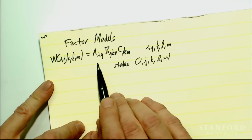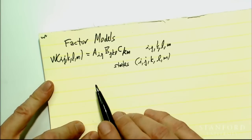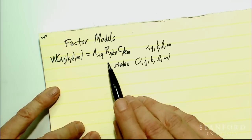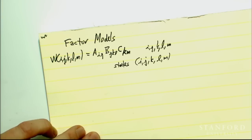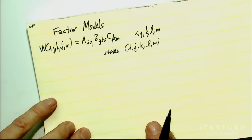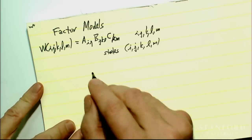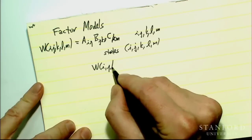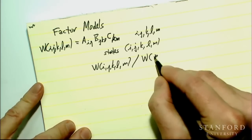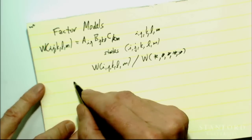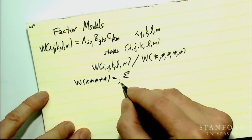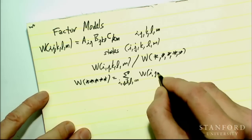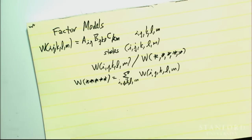A sub IJ is basically a matrix of numbers — if these are digits, it's a ten-by-ten matrix. C is also a matrix, but B is a tensor, perhaps ten-by-ten-by-ten. So it's a bunch of numbers that you multiply together to get the weight of a state. If we're thinking of these as probabilities, then the probability of being in state IJKLM is W of IJKLM divided by W-star-star-star-star-star, which is the total weight — defined as the sum over all I, J, K, L, M of W of IJKLM.